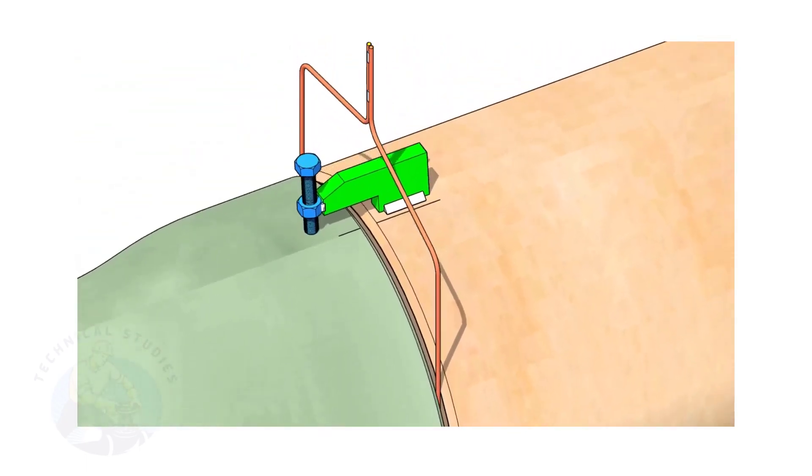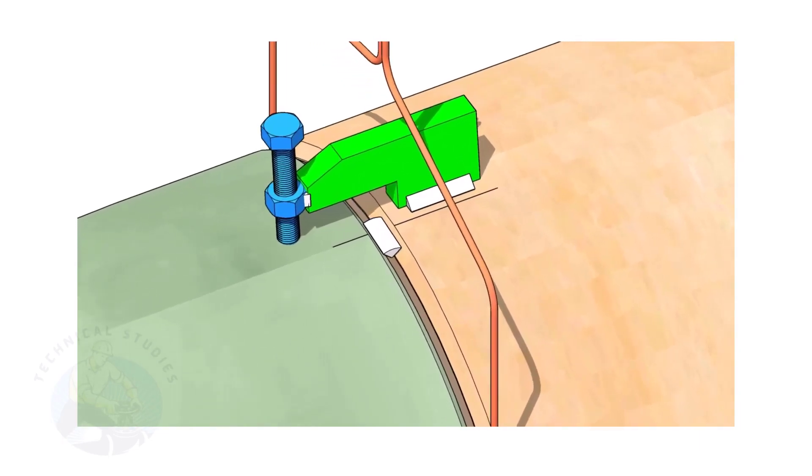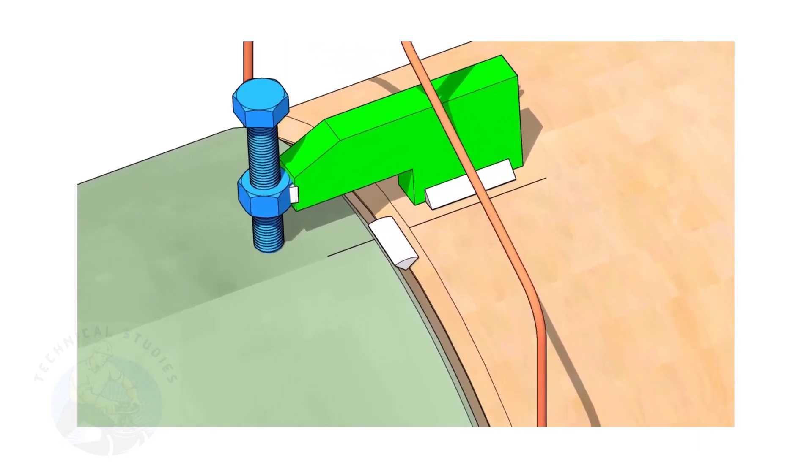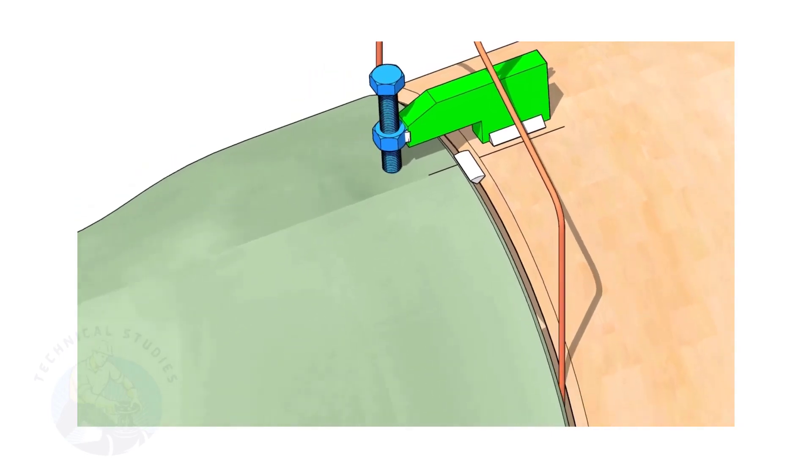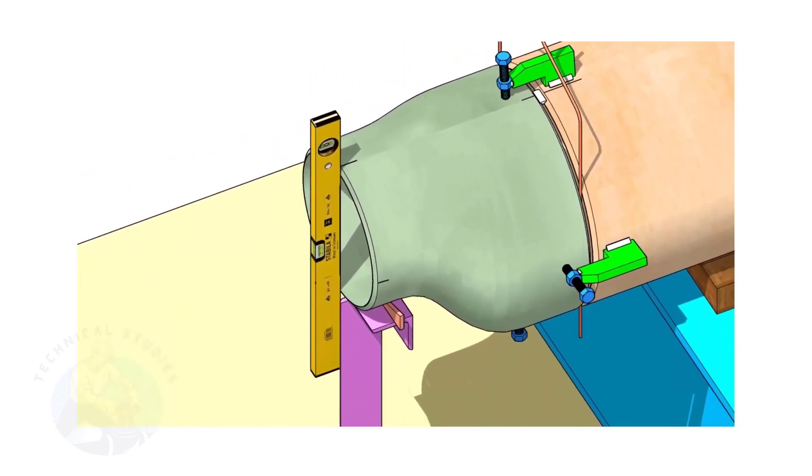Now, tack weld on the top side of the joint. Correct the levelness of the outer face of the reducer.